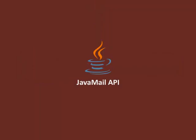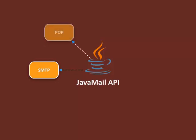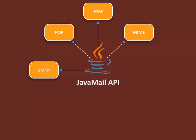The protocols that support the Java Mail API are Simple Mail Transfer Protocol or SMTP, Post Office Protocol or POP, Internet Message Access Protocol or IMAP, Multipurpose Internet Mail Extensions or MIME, Network News Transfer Protocol or NNTP, and others.